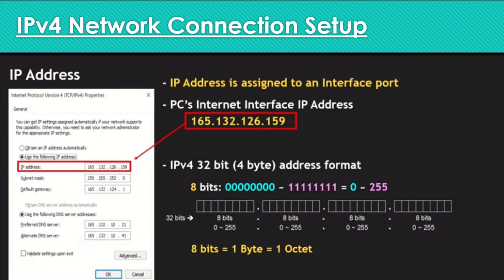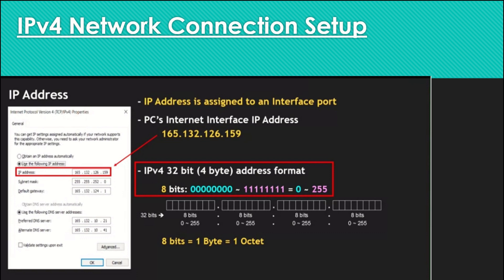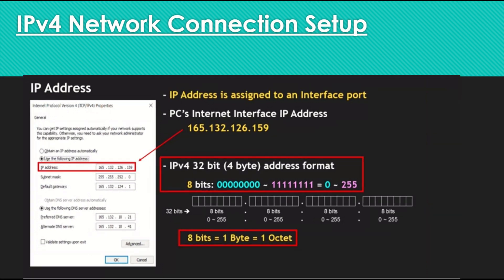Let's look at the IP address first. The PC's internet interface IP address is 165.132.126.159. As you can see, the IPv4 32-bit address is listed in decimal numbers — actually it's listed in binary numbers that were converted to these decimal numbers. The 32-bit address is a combination of 4 bytes and each byte is 8 bits. One byte is also called one octet, so a byte and an octet are the same thing — each is 8 bits. With 8 bits you can represent a number ranging from 0 to 255.